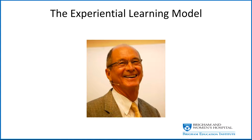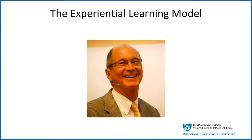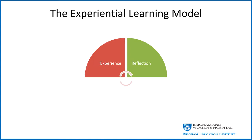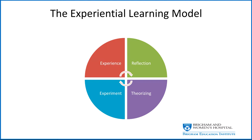Another approach is the experiential learning model, which incorporates more theories about personality and how it affects our approach to learning. Developed by David Kolb, an educational theorist at Case Western, it divides learning into four stages: concrete experience, in which a new experience or situation is encountered; reflective observation, in which the learner watches and reflects with attention to discrepancies with previous assumptions; abstract conceptualization, or theorizing, in which new ideas or modifications emerge; and active experimentation, in which the learner applies concepts to the world around them.